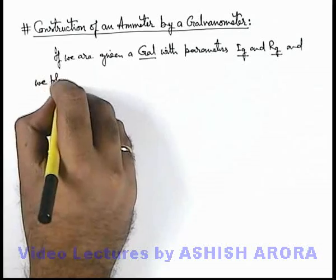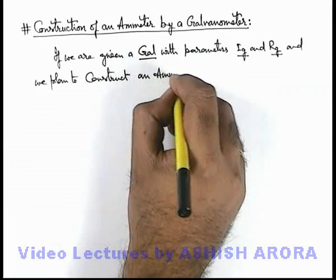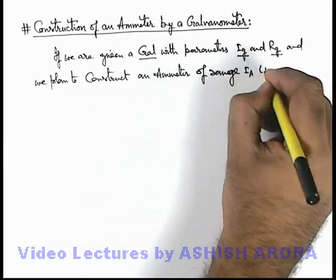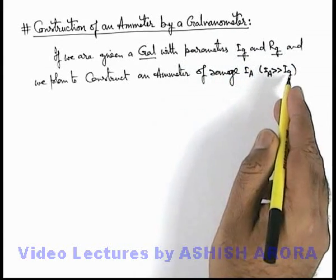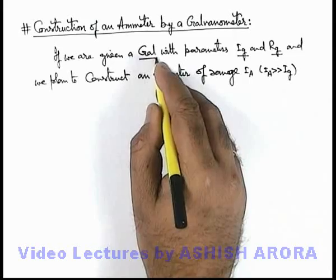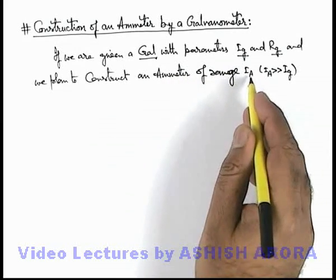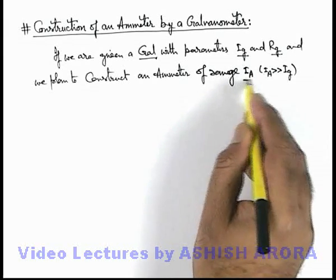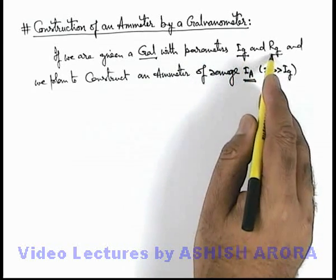If we plan to construct an ammeter of range i-a, where the value of i-a is quite large compared to i-g — because galvanometers are generally used to measure very low current of the order of milliampere range. Even some galvanometers are so sensitive that they are used to measure microampere currents. Ammeters are generally used from milliampere to hundreds of ampere range.